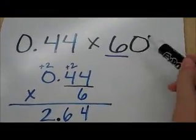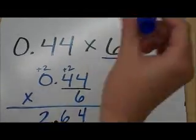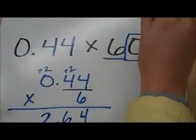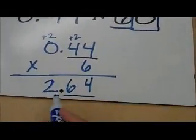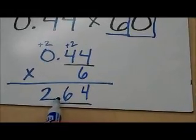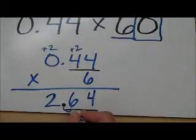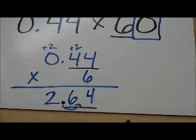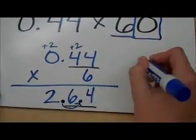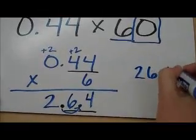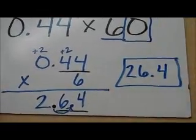okay, we're going to go back to our product and we're going to think, well, we have to move our decimal place to the right once because of the one zero. So if I move it over once, my decimal is now going to be here and I'm going to have 26 and 4 tenths.